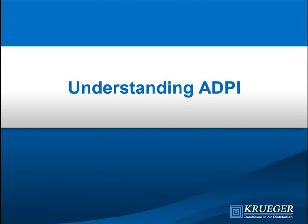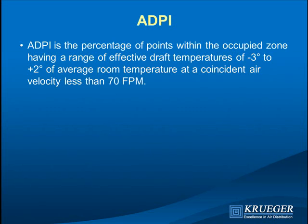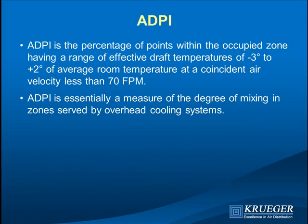ADPI — Air Diffusion Performance Index — is a means of predicting and reporting temperature and velocity spread within the occupied zone. It is the percentage of points that have a calculated draft temperature between minus three and plus two degrees, which are the boundaries of comfort for a person at one met and one clo at about 75°F. Points with air velocity above 70 feet per minute are excluded. ADPI is a measure of the degree of mixing in zones served by an overhead system.